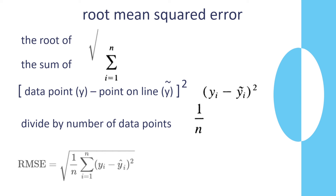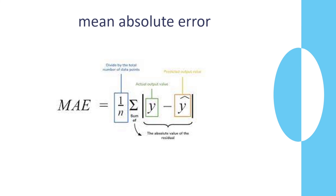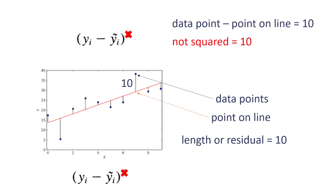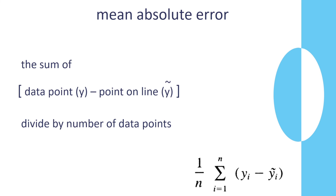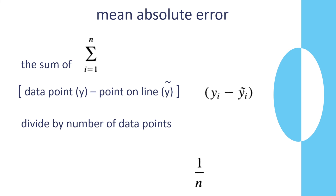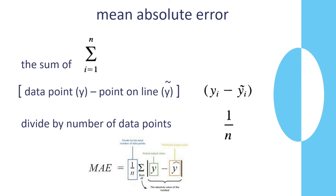Finally, the mean absolute error. It's similar to MSE except we don't use the square — we take the sum of the absolute residuals divided by the number of data points. That's the mean absolute error.